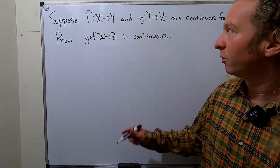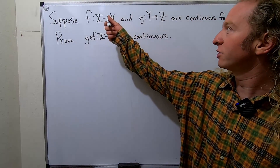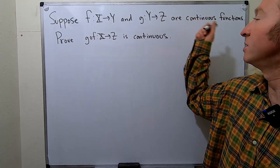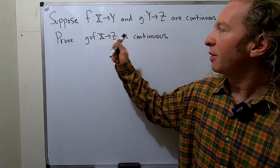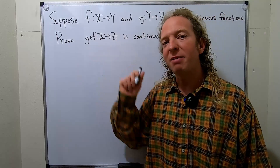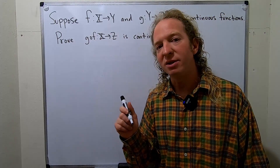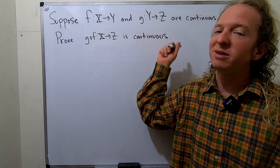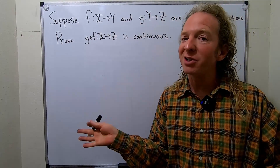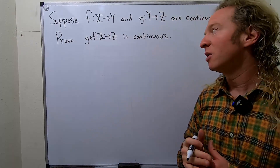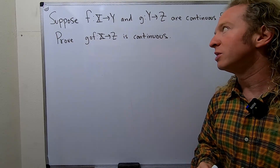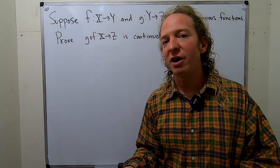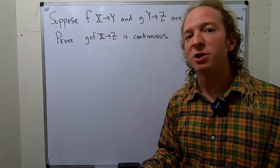Hey everyone. In this video we have two functions f and g, and they are continuous, and we have to prove that the composition is continuous. I should mention here that x, y, and z are topological spaces, so we're going to use the topological definition of continuity in this problem.